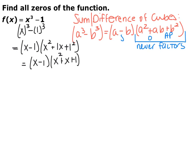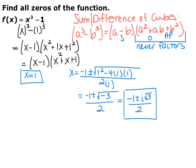Factoring x cubed minus 1 gives (x minus 1)(x squared plus x plus 1). This trinomial quadratic on the back part will never factor, so you find its zeros another way. The first factor gives x equals 1 directly. For the quadratic, applying the quadratic formula gives negative 1 plus or minus the square root of negative 3, all over 2. Pulling out the square root of negative 1 as i, you get negative 1 plus or minus i root 3, all over 2. Make sure you know how to factor sum and differences of cubes — it appears frequently in this class and in calculus.